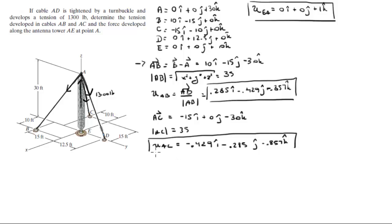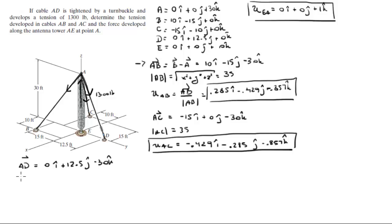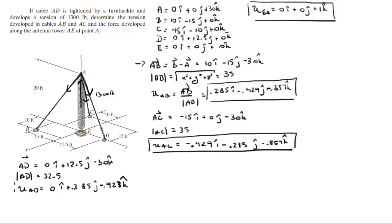The last unit vector is AD, which equals 0i + 12.5j - 30k. The magnitude is 32.5. Unit vector AD equals 0i + 0.385j - 0.923k. So we now have all our unit vectors.